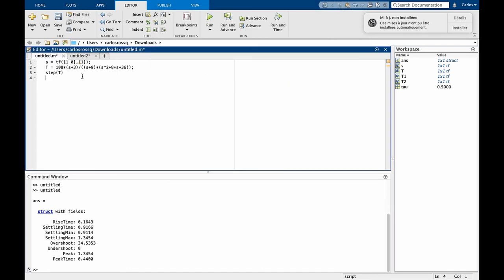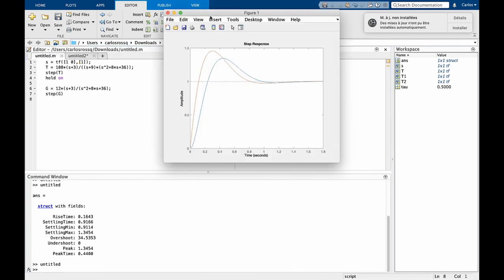Now let's define as well the simplified transfer function. We can write here hold on, so we can overlay more plots into the same graph. Here is our simplified transfer function, and we can now do step g, hold on, and plot the time response of g. And you see here that there is a significant discrepancy between them.